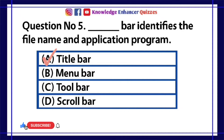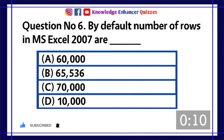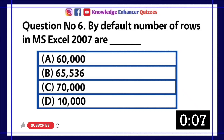Option A is the right answer. Question number 6: By default, number of rows in MS Excel 2007 are — A. 60,000, B. 65,536, C. 70,000, D. 10,000.